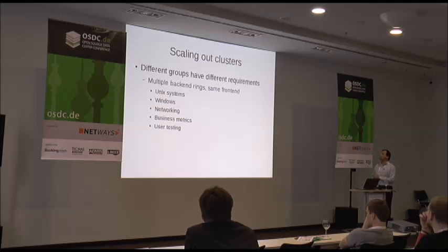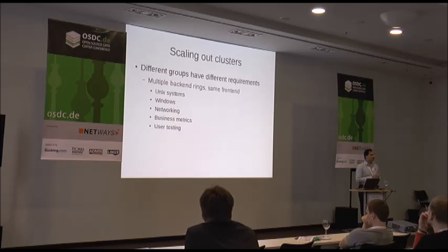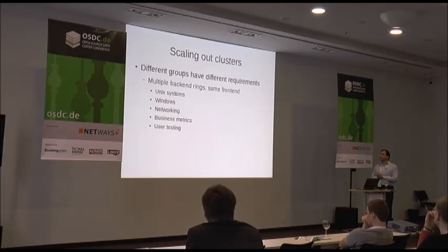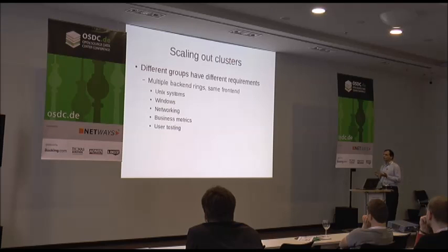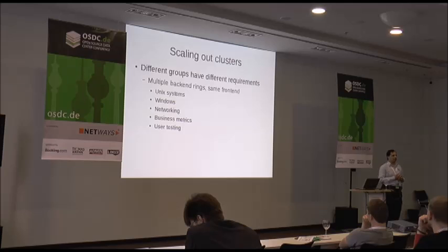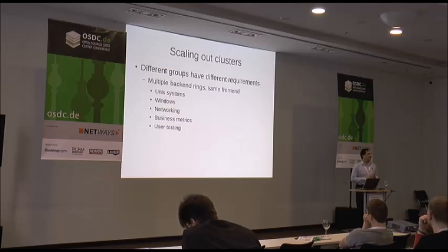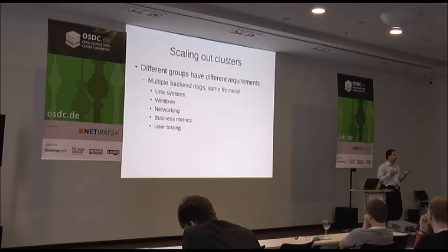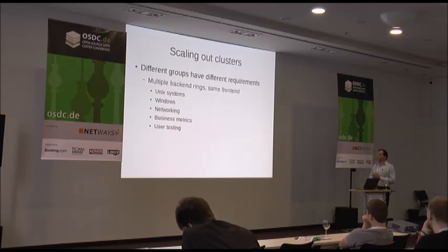We have different groups with different requirements, so we ended up with multiple backend rings. The sys cluster is about 30 machines; user testing is a two-box cluster; we have eight or ten machines for business metrics; a separate cluster for our network group; and a separate cluster for the Windows people. If you can shard out your data, you can still keep one or two front-end boxes. Each of these things scales horizontally.